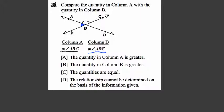So we're comparing these two. The quantity in column A is greater - ABC does look greater than ABE. The quantity in column B is greater? Well, ABE looks acute, so it doesn't look true. The quantities are equal?